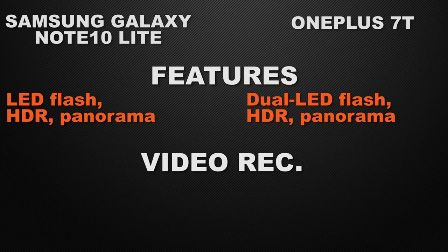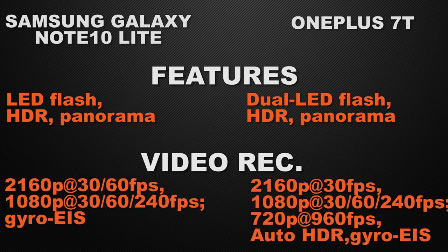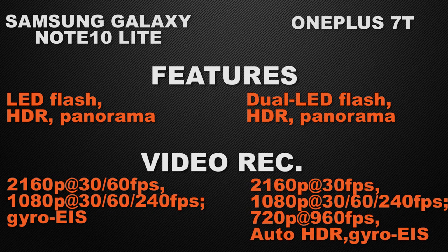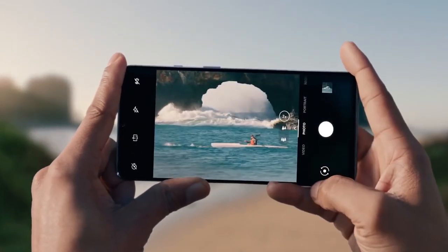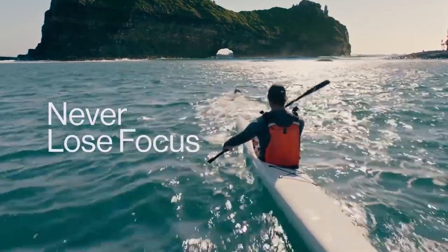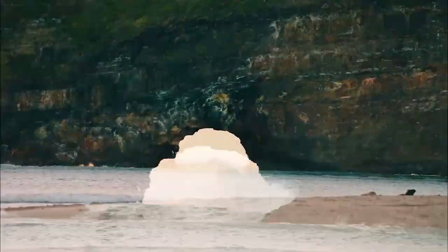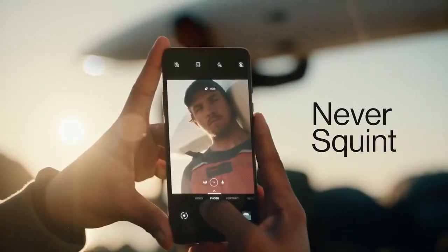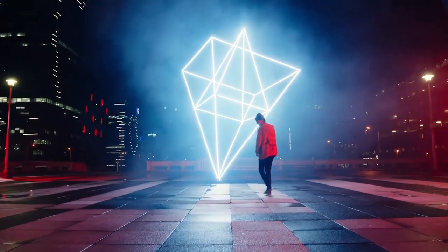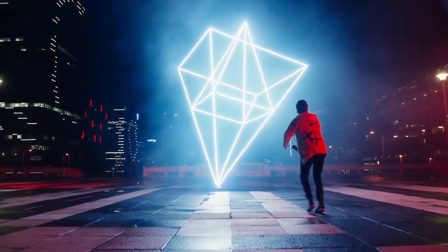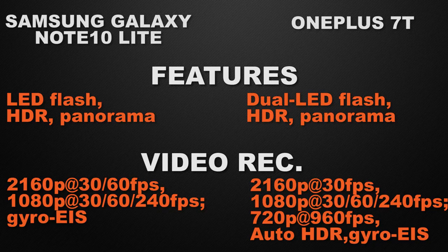About the video recording of the devices, both have 4K at 30 and 60 FPS, and 1080p at 30, 60, and 240 FPS video recording. OnePlus 7T additionally has 720p at 960 FPS video recording, and both devices have electronic image stabilization. So the winner is again OnePlus 7T due to its auto-HDR recording feature.